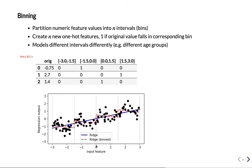Another technique is binning. You take a feature — say feature x1 — and separate it into multiple bins. In this case the feature goes from minus 3 to 3, and we split it into four bins: minus 3 to minus 1.5, minus 1.5 to 0, 0 to 1.5, and 1.5 to 3. These become four new features. Depending on the value, a data point ends up in one of the bins — for example, minus 0.75 ends up in its bin as a 1 with the rest 0, and 2.7 ends up in its bin. So we've represented one feature as four features.